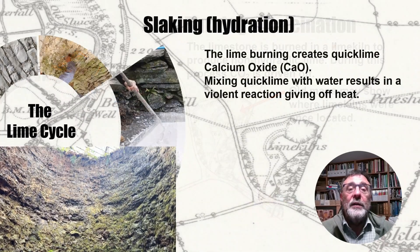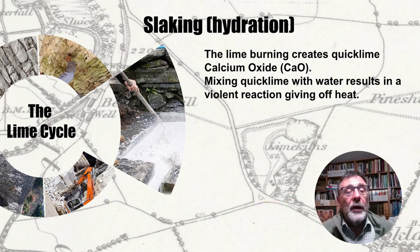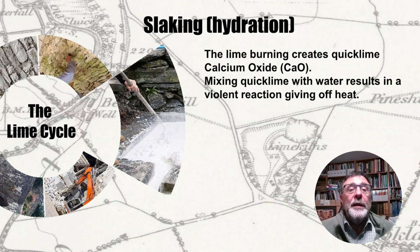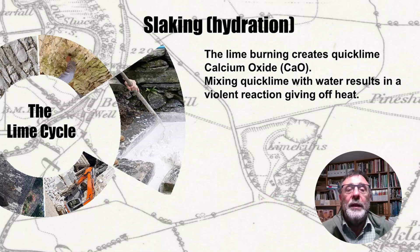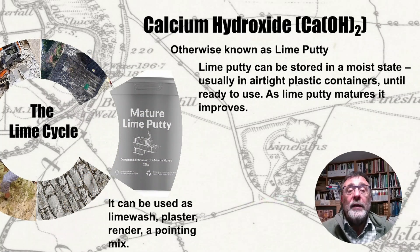The next stage in the cycle is to take that quicklime and introduce water. Quicklime has a violent reaction when water is added and it boils. This part of the process is called slaking. The amount of water used will determine the nature of the lime that results, but for the purpose of this video let's assume we're simply making a lime putty. Our quicklime — calcium oxide — has combined with water and has now become lime putty, or calcium hydroxide to give it the proper chemical term.